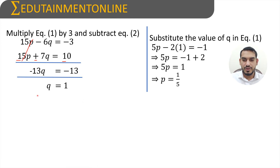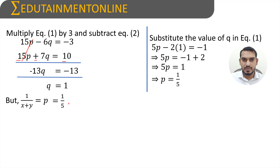Now we have both p and q. We know that 1 by (x+y) equals p equals 1 by 5. Cross multiplying, 5 times 1 equals x+y times 1, so x plus y equals 5. Let us take this as equation 3.